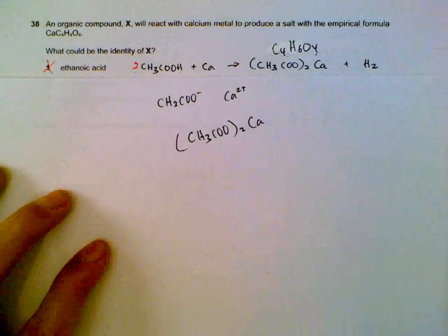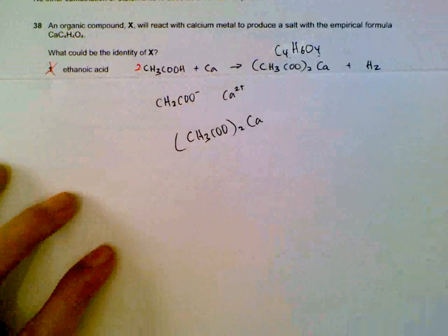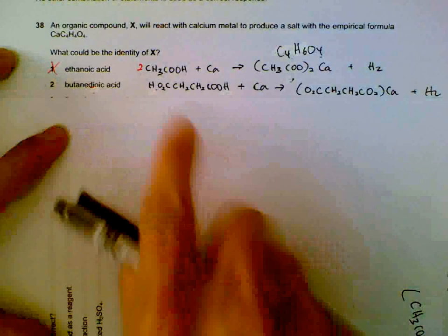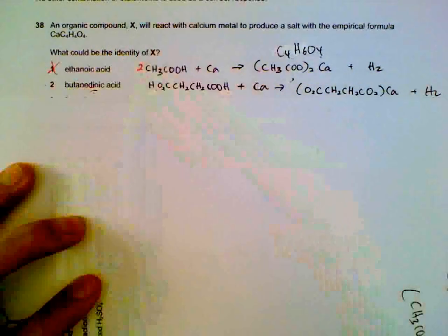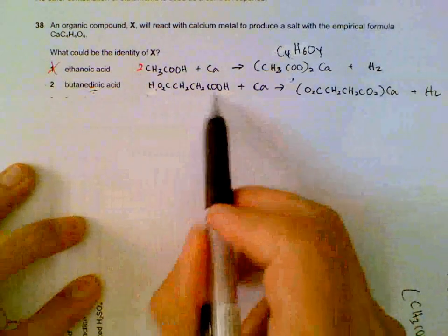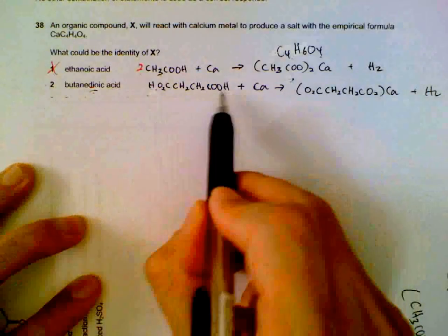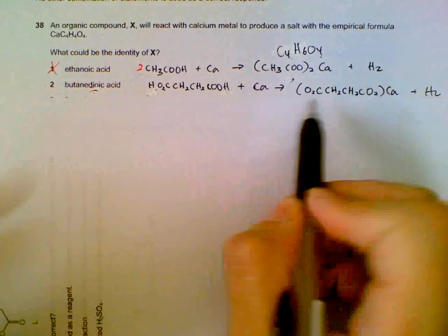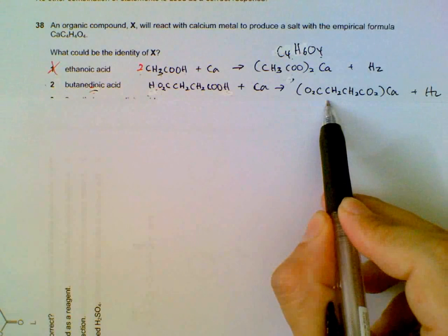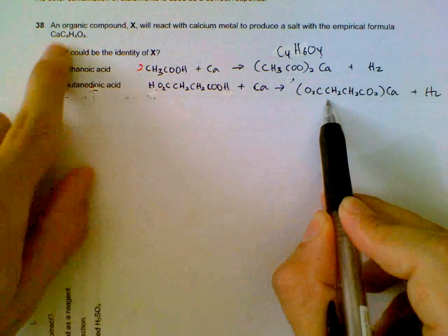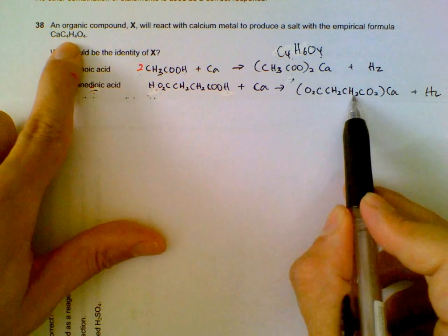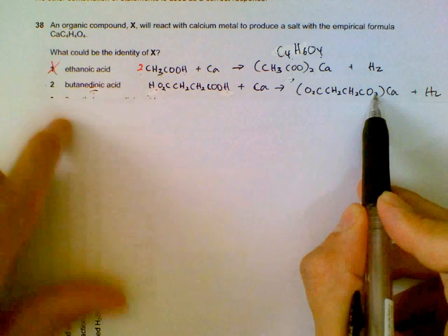That doesn't match the empirical formula C4H4O4 that we want, so statement A is eliminated. That means statements 2 and 3 must be correct. Looking at butanedioic acid: 'dioic' means it has two acidic groups, so it can release two hydrogen ions. The formula of the salt we get tallies with the empirical formula C4H4O4 — so this is correct.